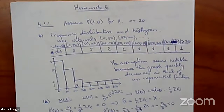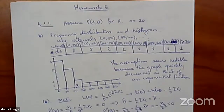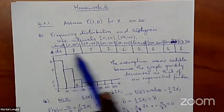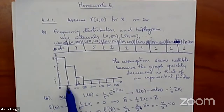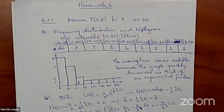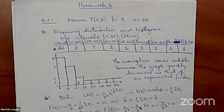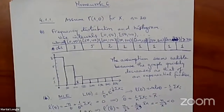In problem number one, we needed to assume a gamma distribution with parameters one and theta — which is technically an exponential distribution — with n equals 20 observations. You needed to draw a frequency histogram. For each interval, draw a bar with height equal to the number of observations in that interval. Part b asks: does this seem credible? It seems to be going down quickly as an exponential function, so the claim seems credible.